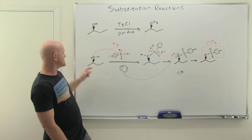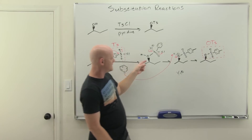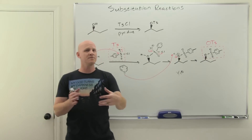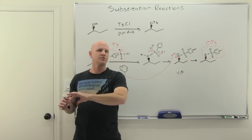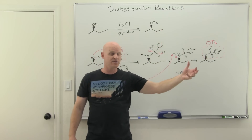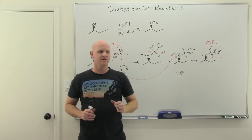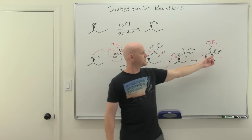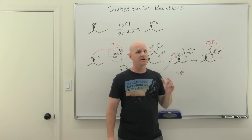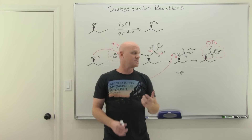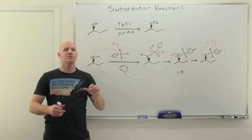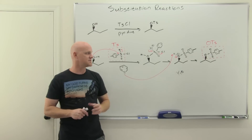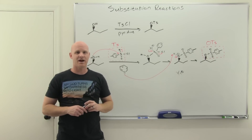Importantly, the carbon-oxygen bond is never broken throughout this process, so the configuration is retained. This is the key contrast: using SOCl2 or PBr3 turns the hydroxyl group into an alkyl halide — a good leaving group — but with inverted configuration. Using the sulfonate ester turns OH into a different good leaving group, but with retained configuration. This ability to choose retained or inverted configuration has real relevance in organic synthesis, which I'll allude back to in the last lesson of this chapter.